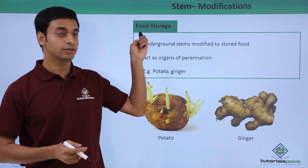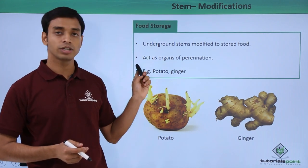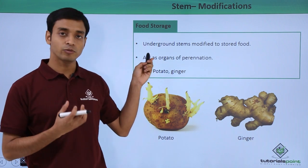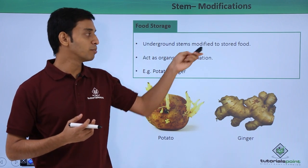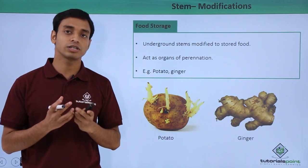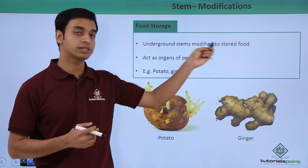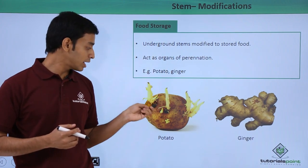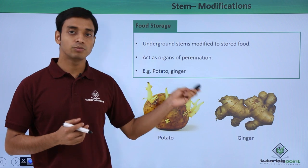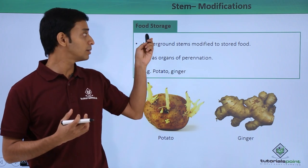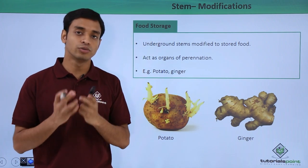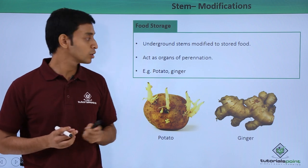The first modification is known as food storage. From the name we can understand that the stem, which is mostly an underground stem, gets modified into structures that can store food materials. As you can see, potato and ginger are examples of underground stems modified as food storage structures.